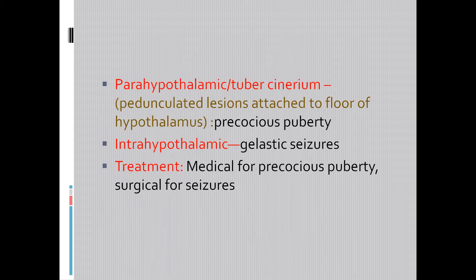There are two types: parahypothalamic or tuber cinereum lesions and intrahypothalamic lesions. Parahypothalamic lesions, like the one we saw, are pedunculated lesions attached to the floor of the hypothalamus and are associated with precocious puberty. Intrahypothalamic lesions are within the substance of the hypothalamus and they generally present with gelastic seizures. They are treated either medically for precocious puberty or surgically for seizures. Thank you.